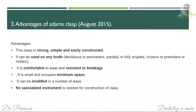The next short note is advantages of Adam's clasp. Adam's clasp can also come as a separate question. The advantages are: it is strong, simple and easily constructed; it can be made on any tooth — deciduous, permanent, partially erupted, fully erupted or any other; it is comfortable and resistant to breakage; it requires minimal space; it can be modified in different ways; and no specialized additional instruments are needed for its construction.